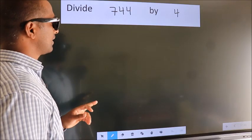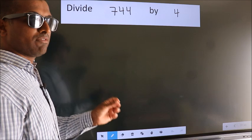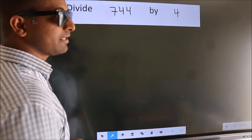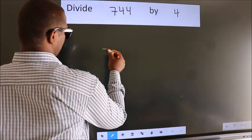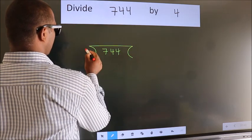Divide 744 by 4. To do this division, we should frame it in this way. 744 here, 4 here.